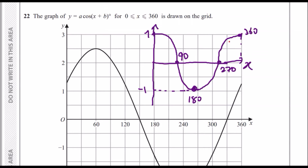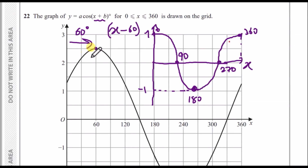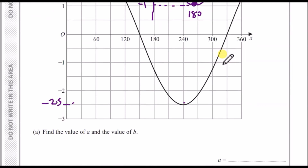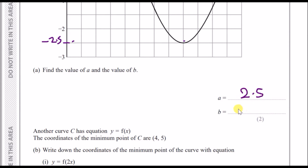To figure out A and B: looking at the graph, instead of the peak starting at 0 degrees, it starts at 60 — so the graph is shifted 60 degrees to the right. The B inside the function deals with shift; a shift to the right means we write x minus 60, not plus 60 (plus would shift left). So B equals minus 60. For A: the standard maximum is 1, but this graph's maximum is 2.5 and minimum is minus 2.5, so A equals 2.5. Therefore A is 2.5 and B is minus 60.